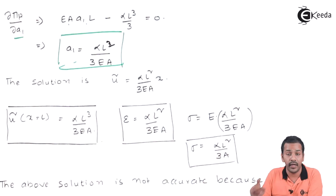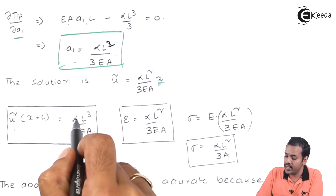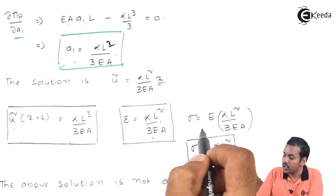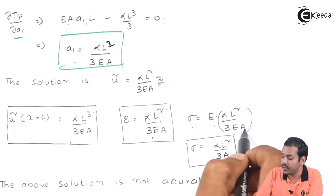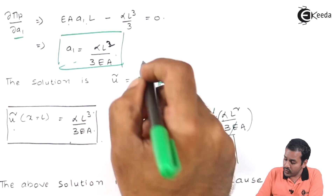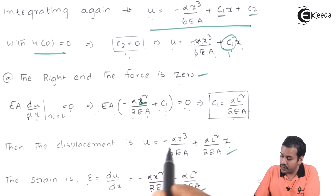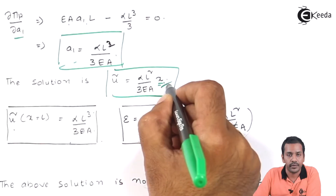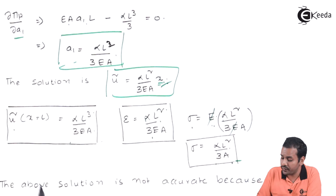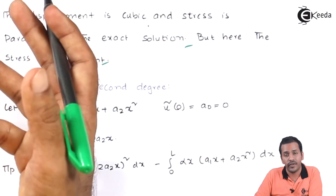The solution is u-tilde = a₁ x = alpha L² divided by 3EA times x. The displacement at x = L is alpha L³ divided by 3EA. The strain is alpha L² divided by 3EA, and the stress sigma = alpha L² divided by 3A, which is a constant. However, the exact displacement is cubic and the exact stress is quadratic, so this linear trial function is not a good approximation — the stress is constant instead of quadratic.